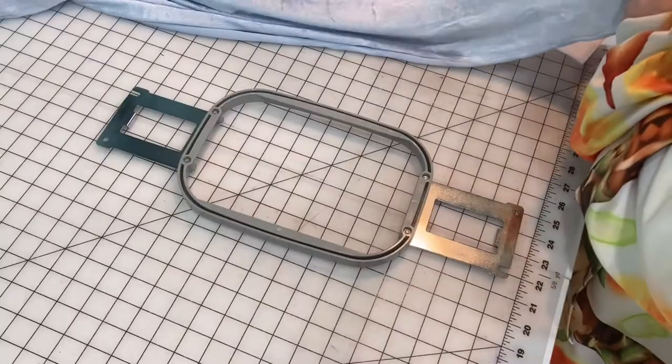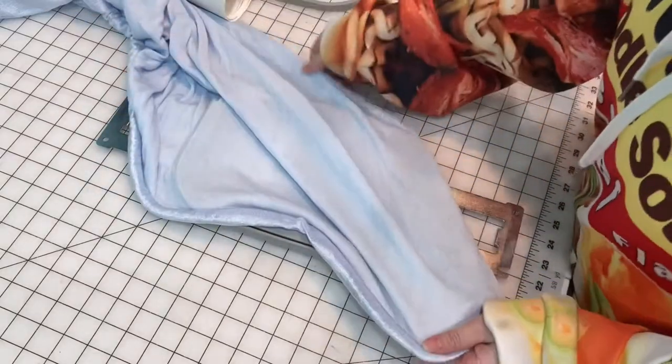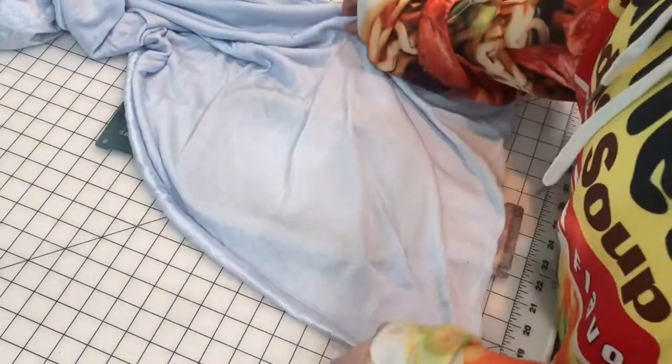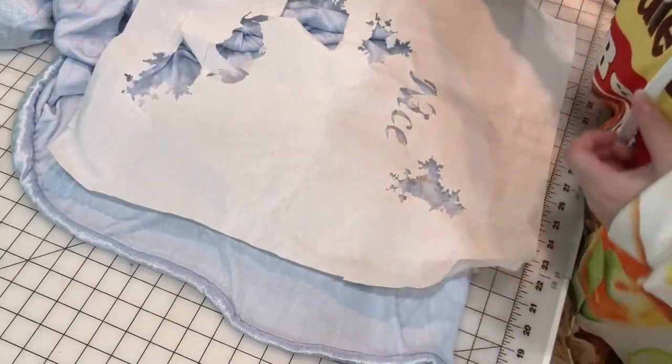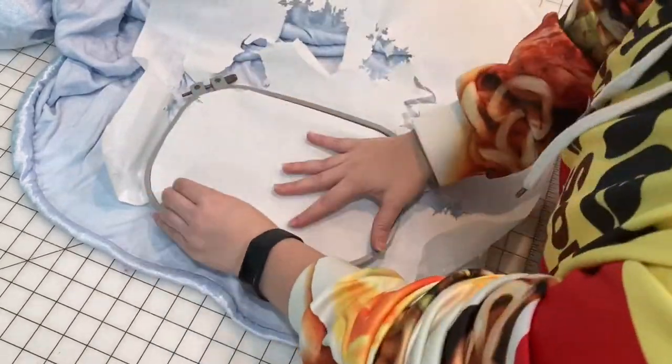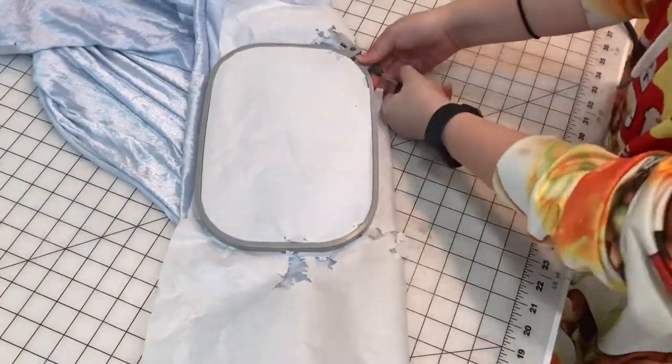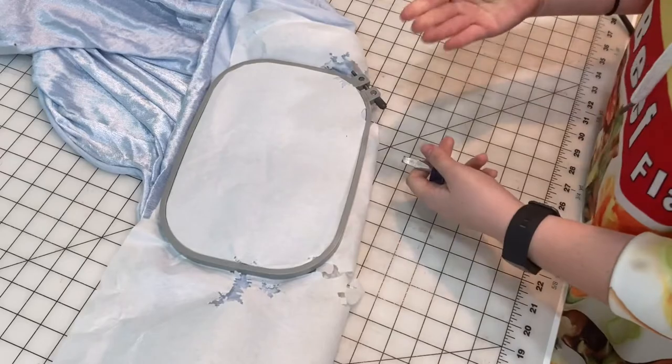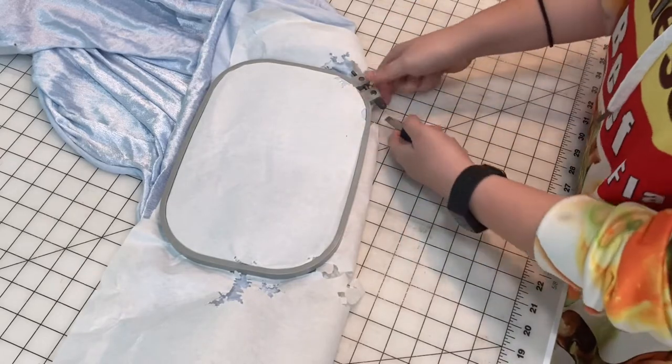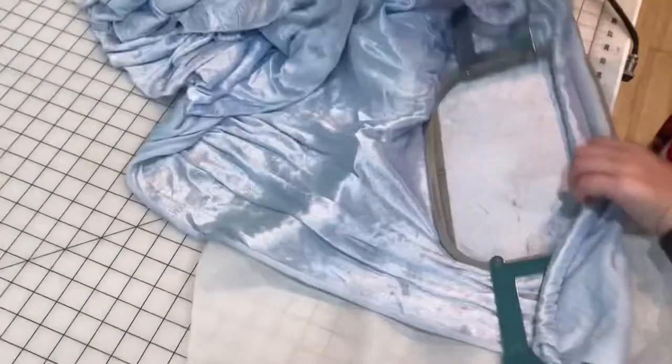Anyways, here is my hoop and the fabric I'm going to be using. It's a kind of a soft, light bluish gray fabric. And I'm just going to put it onto my embroidery hoop and put the stabilizer on top of that. And then close the embroidery hoop, just like I'm doing here.